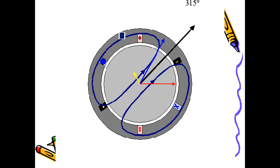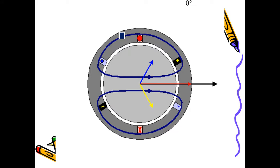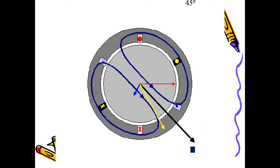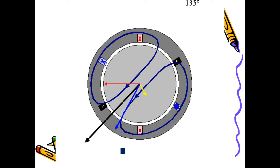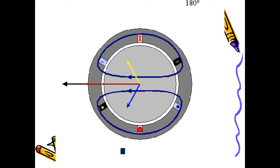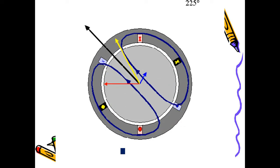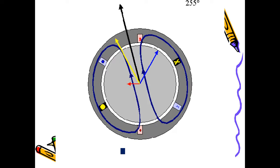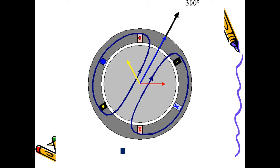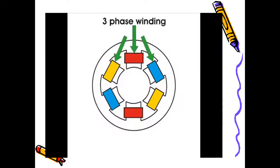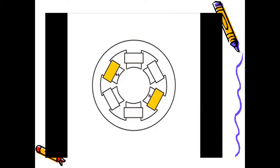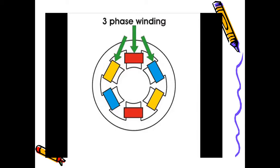When yellow is increasing, the others are reducing. You can see the RYB variation, but the black one — the resultant magnetic field — will be the same magnitude all the time. The resultant magnetic flux is rotating. This is what we call the revolving magnetic field when three-phase supply is given.